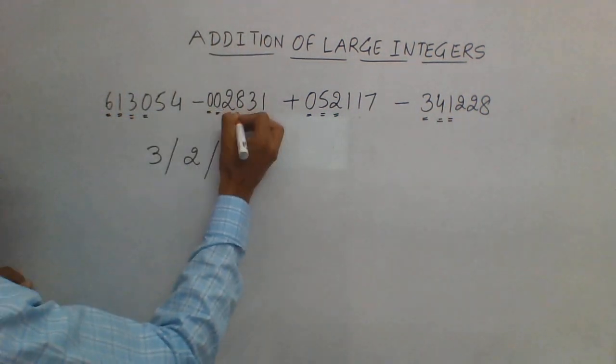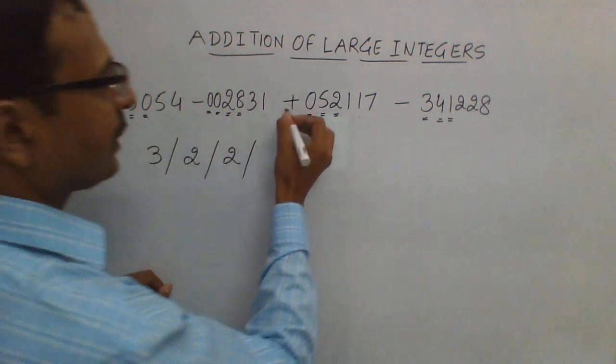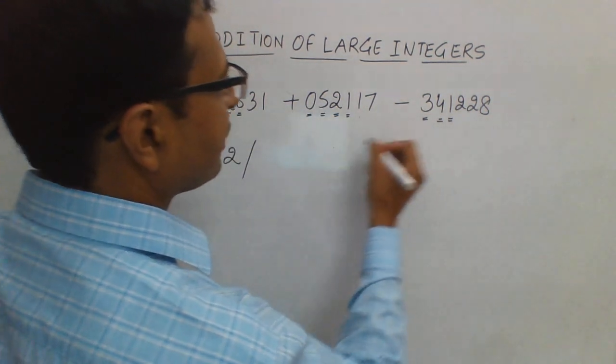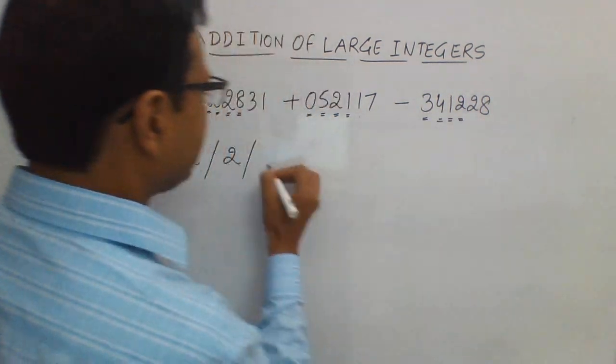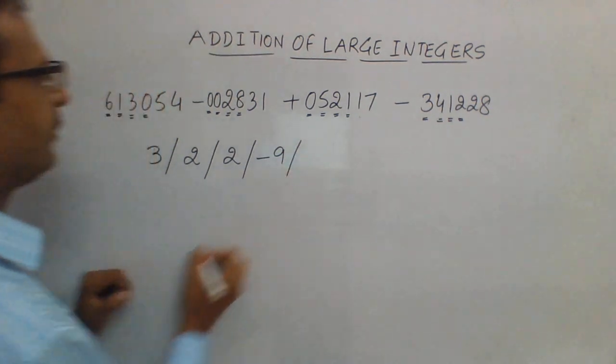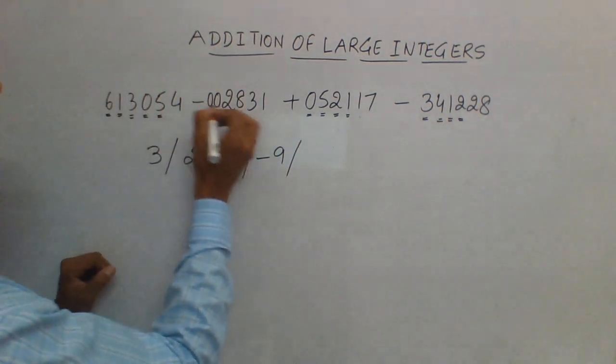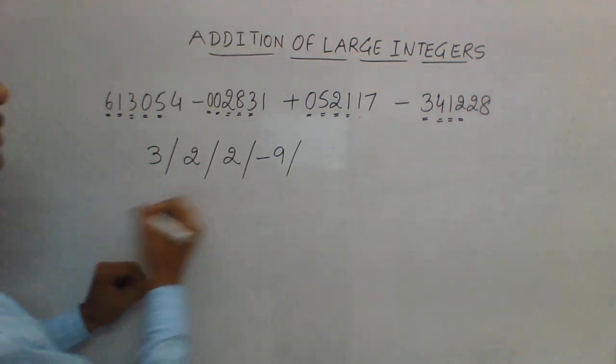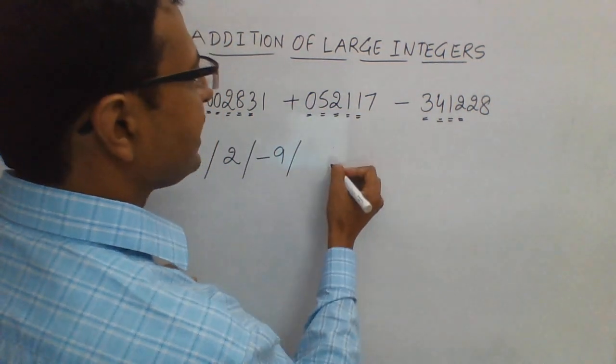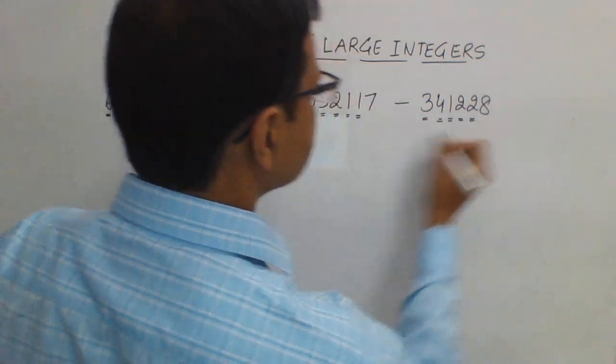0 minus 8 is minus 8, plus 1 is minus 7, minus 7 minus 2 is minus 9. So we have a negative number. Then 5 minus 3 is 2, 2 plus 1 is 3, 3 minus 2 is 1.